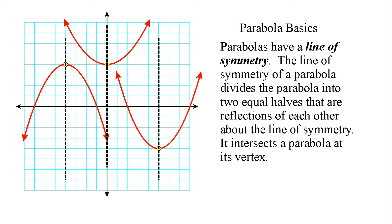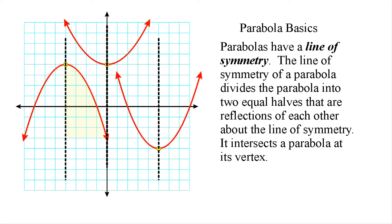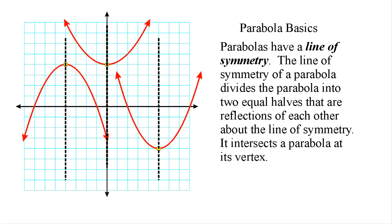Something else that we need to be familiar with when dealing with parabolas is the line of symmetry of a parabola. Basically, that is the line that will equally divide that parabola into two equal halves. So if you were to take that parabola and fold it along its line of symmetry, the two halves would line up perfectly. So the line of symmetry is just the line at which, if you were to draw, would create two halves, and each half is a reflection of each other.